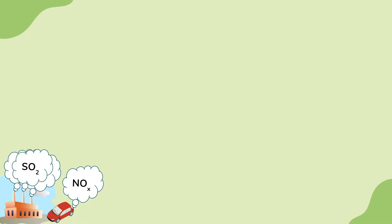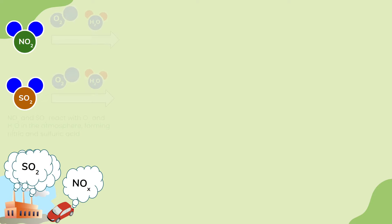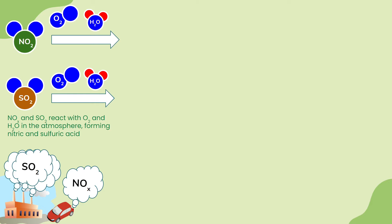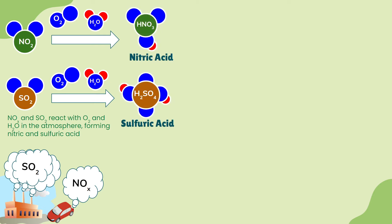We'll go through a diagram that walks through exactly how acid rain forms from a chemistry standpoint. The primary pollutants SO2 and NOx are the precursors — the ingredients. We have NO2 and SO2 molecules in the atmosphere. They are primary pollutants but can form secondary pollutants. Secondary air pollutants form in reaction with oxygen, water, or sunlight. SO2 and NO2 combine with oxygen and water in the atmosphere to form the secondary air pollutants nitric acid and sulfuric acid.